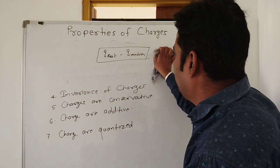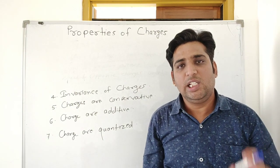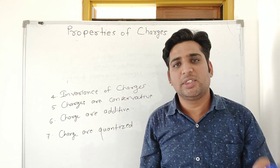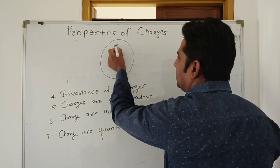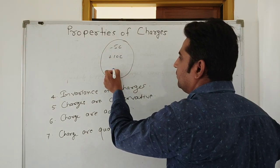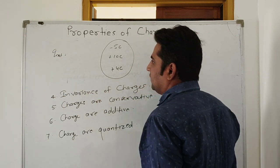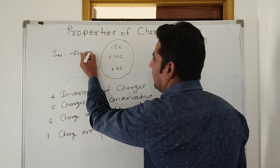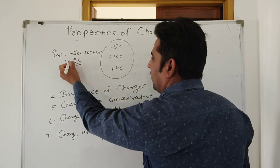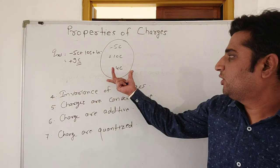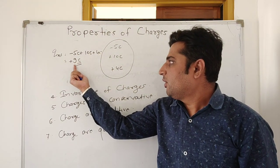Sixth, charges are additive. It means the total amount of charge is equal to the algebraic sum of all charges present in the system. For example, if we have -5 coulombs, +10 coulombs, and +4 coulombs, then Q net equals -5 + 10 + 4 = +9 coulombs.